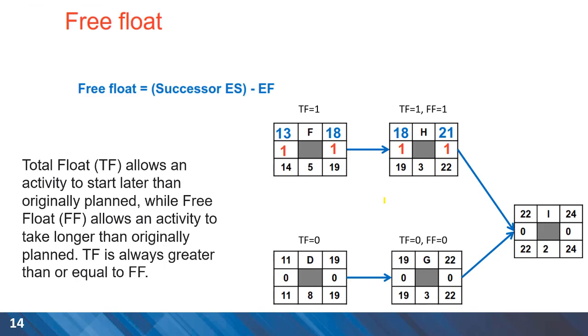Another concept is free float. For any activities such as H, we look at the early start time of the successor, which is I, so 22 days. And the early finish date of the activity itself, activity H, has early finish of 21 days, so the free float is one unit of time in here.